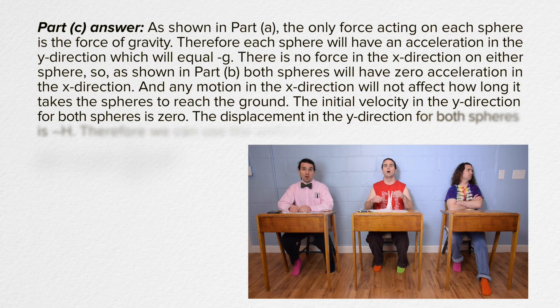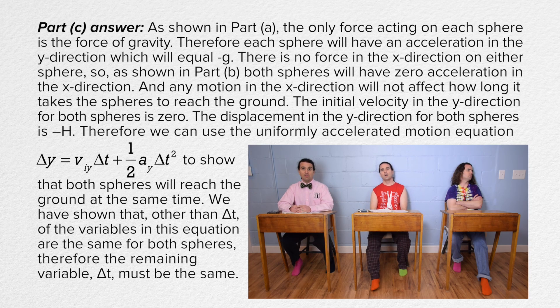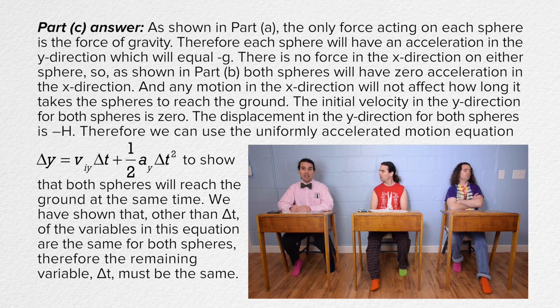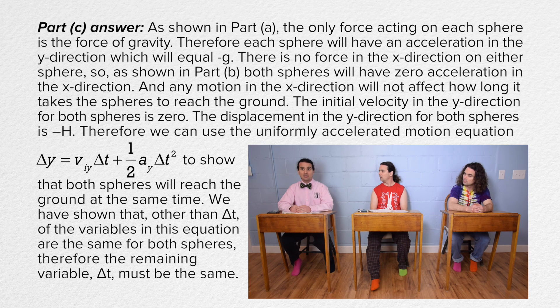As shown in part A, the only force acting on each sphere is the force of gravity. Therefore, each sphere will have an acceleration in the y direction which will equal the negative of the acceleration due to gravity. There is no force in the x direction on either sphere, so as shown in part B, both spheres will have zero acceleration in the x direction. And any motion in the x direction will not affect how long it takes the spheres to reach the ground.